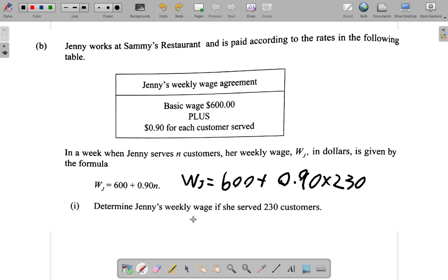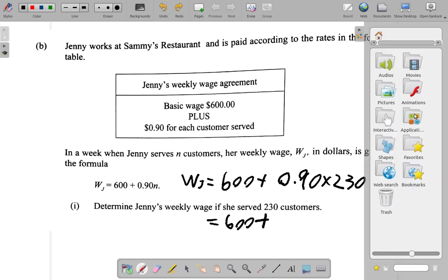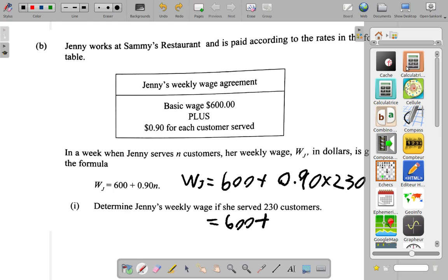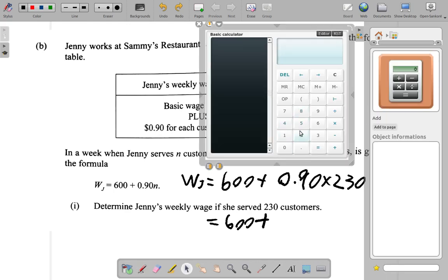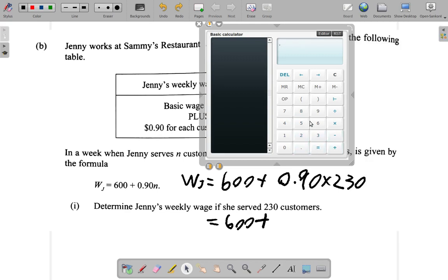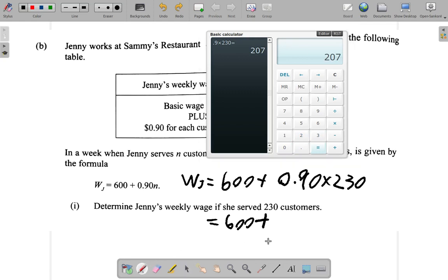It's going to be $600 plus, and you must multiply first. So my calculator here, I have 0.90 multiplied by 230 equals $207. So it's $600 plus $207.